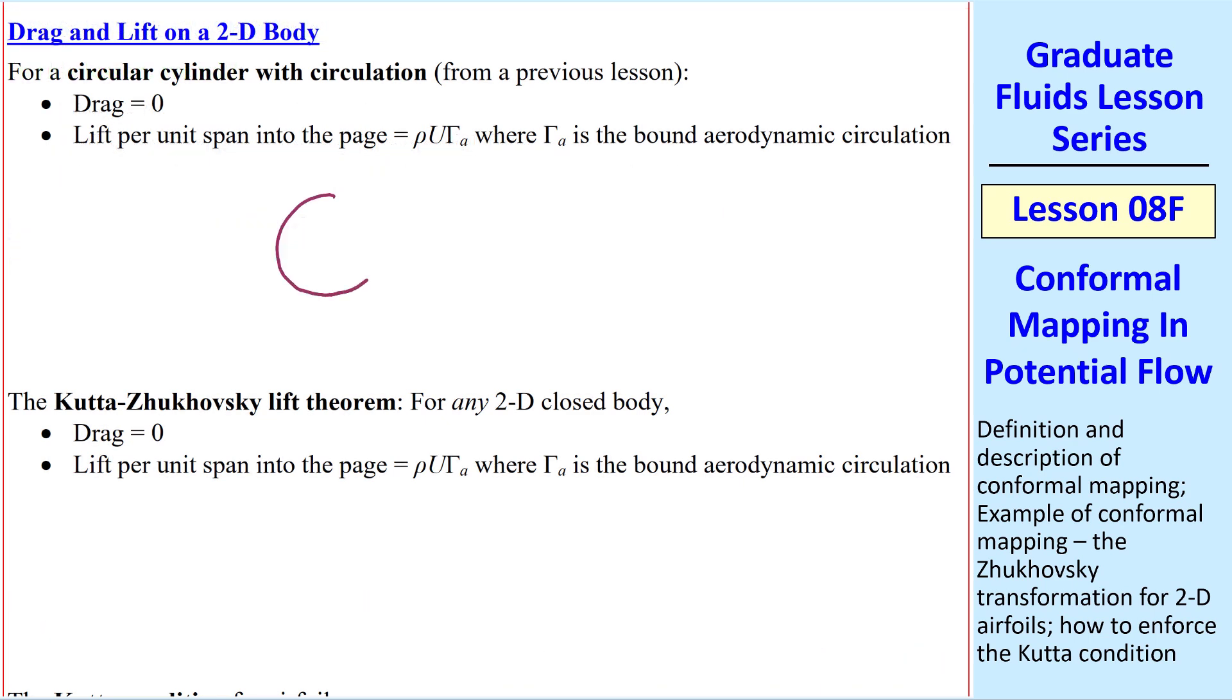First, a quick review. When we add gamma A, the aerodynamic circulation, to flow over a cylinder, the streamlines look something like this, and the circulation leads to a lift. The lift per unit span into the page was rho U gamma A, but there was no drag. Although I did this example with the circular cylinder, it applies for any 2D closed body.